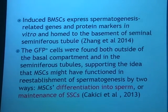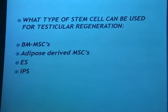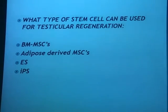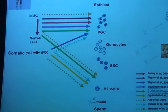Induced bone marrow mesenchymal stem cells may express spermatogenesis-related genes and protein markers in vitro and may home to the basement of seminiferous tubules according to some authors. What type of stem cells can be used for testicular regeneration? We can use bone marrow derived mesenchymal stem cells and adipose derived mesenchymal stem cells. Some researchers use embryonic or IPS cells, which are not ethically approved by our IRB committees. These figures show how embryonic stem cells and IPS can differentiate into the various stages of spermatogenesis.